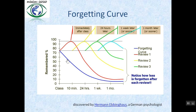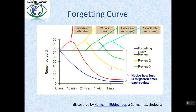In this picture, there are 5 curves. This first blue curve represents the forgetting curve without any review — it shows how information is lost over time when there is no attempt to retain it. The second red curve represents the forgetting curve when we review within 10 minutes. The third yellow curve represents it when we review within 24 hours. The fourth green curve represents it when we review within 1 week. Finally, the fifth cyan curve represents the forgetting curve when we review within 1 month.